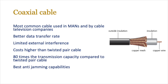Next up is the coaxial cable. This is the most common type of cable used in metropolitan area networks — basically cities — and often by cable television companies. So if you've got a set-top box or a cable box in your home, chances are this is the type of cable being utilized. It has a better data transfer rate and limited external interference. However, costs are much higher than twisted pair cable. It has 80 times the transmission capacity compared to twisted pair and some of the best anti-jamming capabilities of all the cables we're discussing.